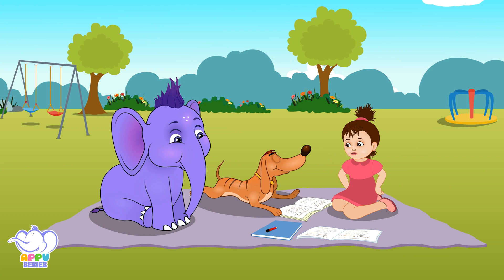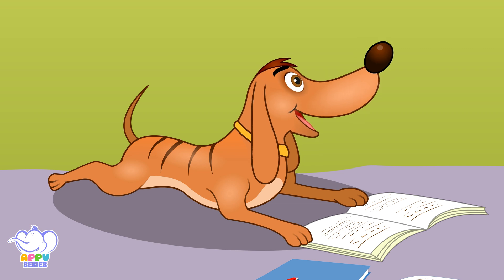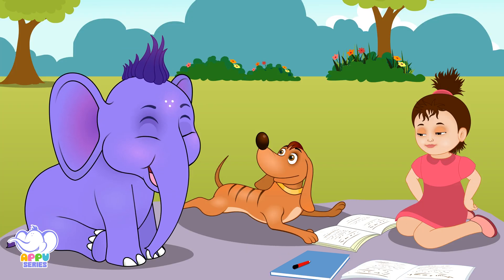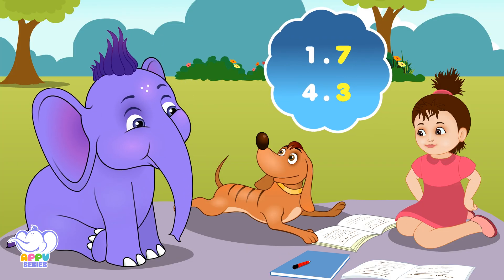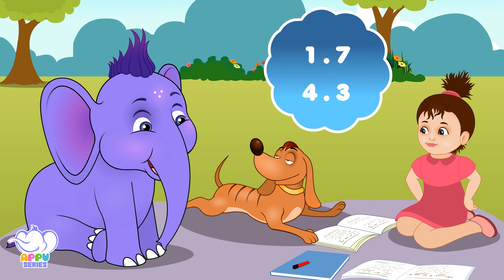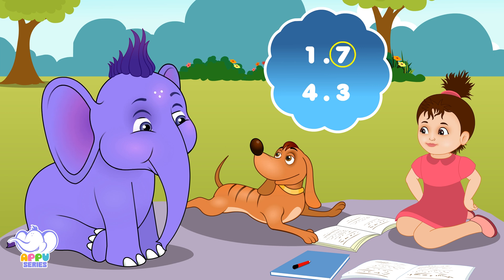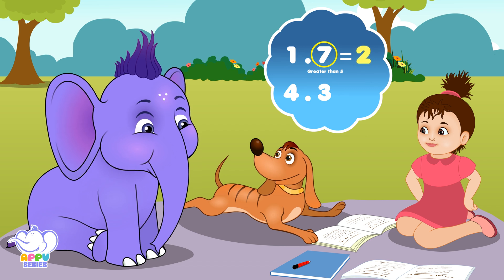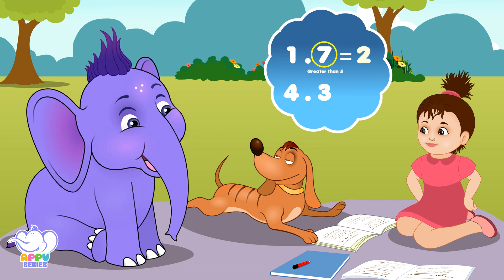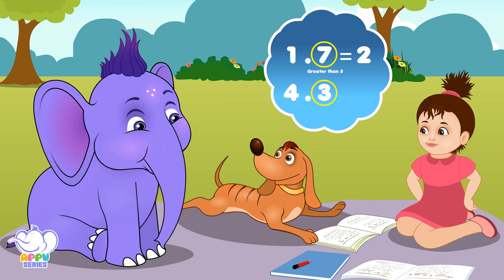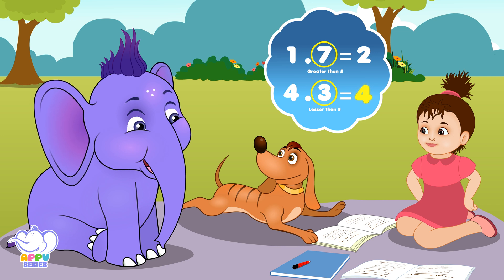Alright, let's play a game where we find what numbers round up and round down. What's rounding up and rounding down? It's something you do with decimal numbers. If the decimal digit is greater than 5, you round it up to the nearest whole number or a bigger decimal point. If it's lesser than 5, you round it down to the nearest whole number or lower decimal point.